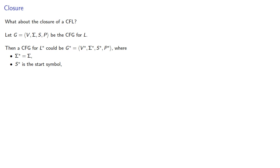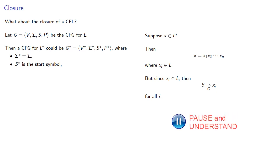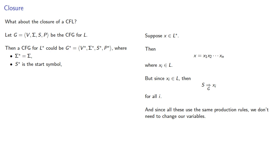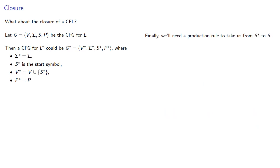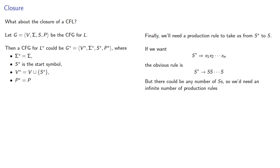What about the production rules? Suppose X is in our star closure — then X is the concatenation of some number of strings from our language. Since each Xi is in our language, starting from the start symbol S we can produce each Xi. Since these all use the same production rules, we don't need to change our variables, though we do need to include our new start symbol. We need a production rule from the start symbol of the closure to the start symbol of our language. The obvious rule handles one string, but there could be any number, so we'd need an infinite number of rules of the form S* → S, S* → SS, S* → SSS, and so on.